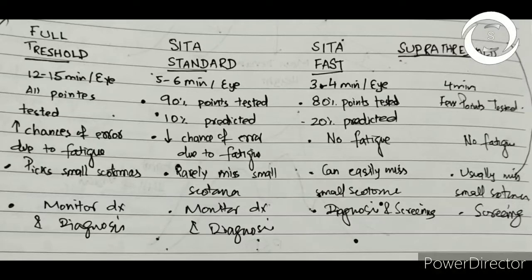In this third lecture of visual fields, we will discuss the already covered different patterns, different algorithms, and different indices of visual fields, but in detail, like what is threshold, supra threshold, fast algorithms, SITA standard, SITA fast.